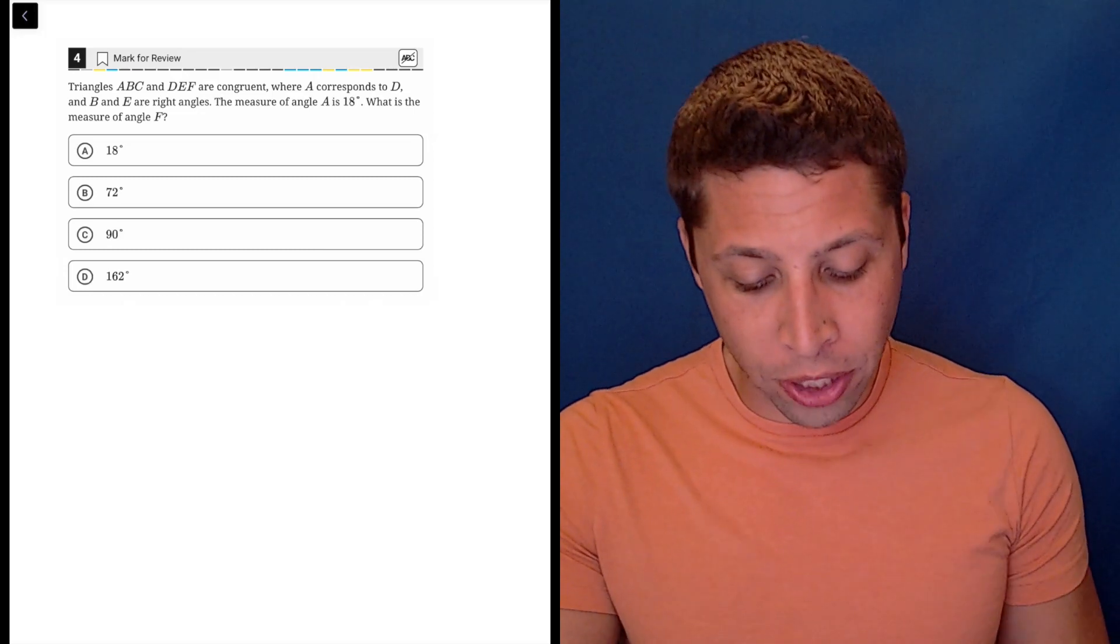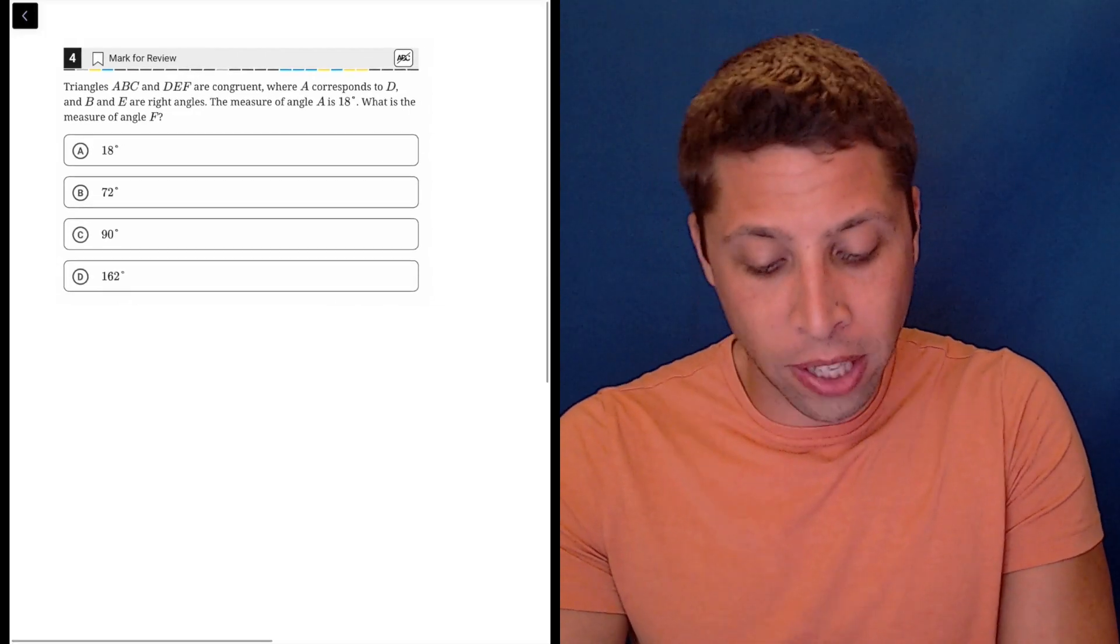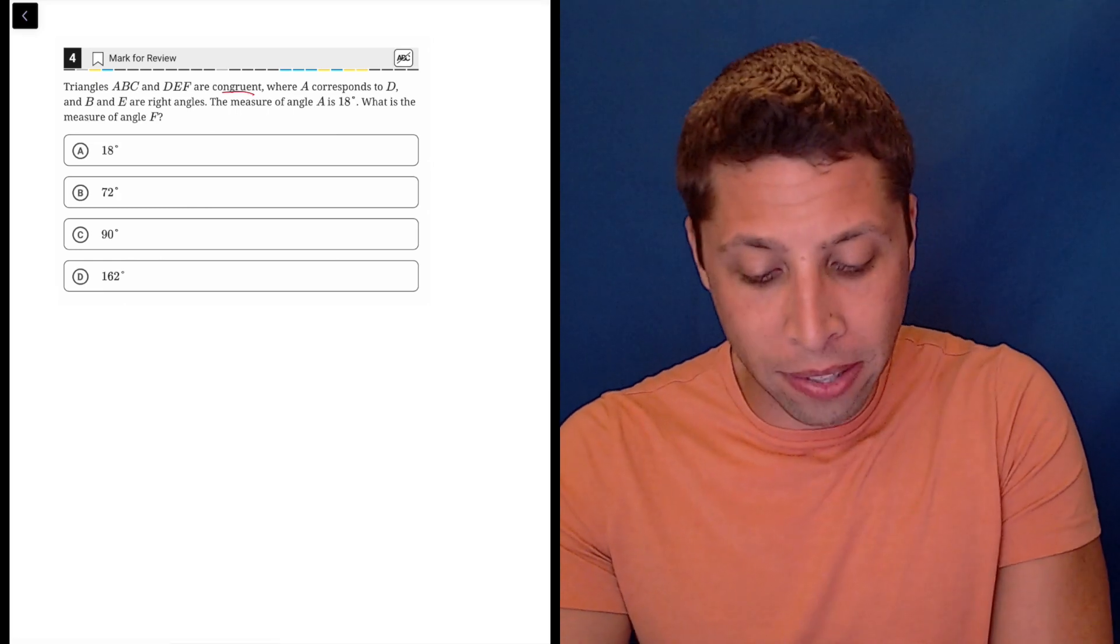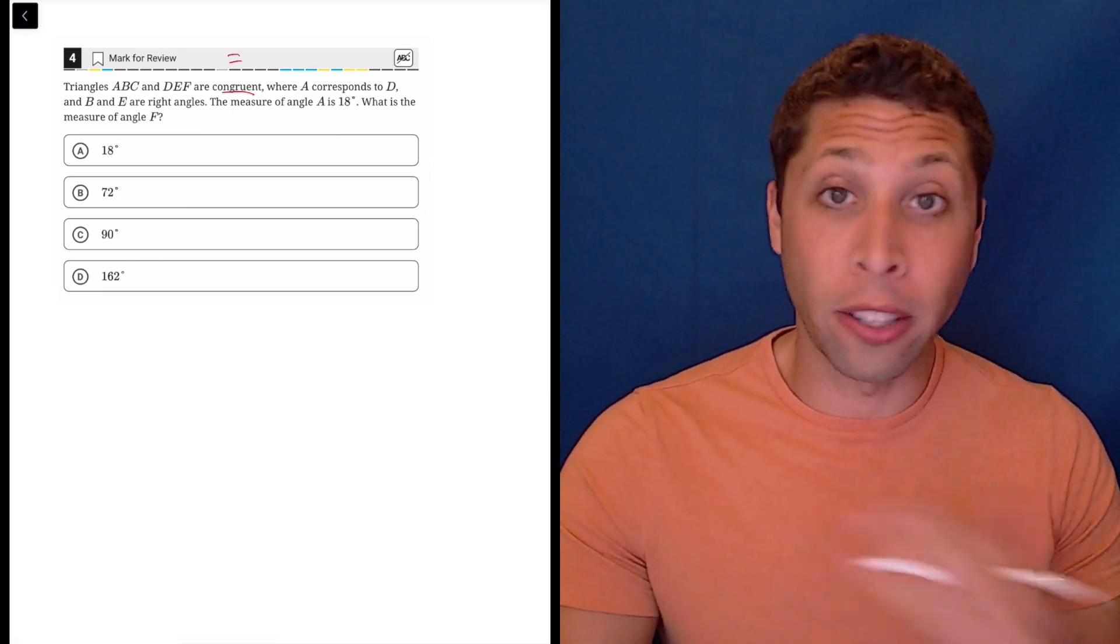For this question, we have to make sure we understand what congruent means, right? So if they're saying that they are congruent triangles, that means that they are just equal to each other, meaning they're the exact same triangle.